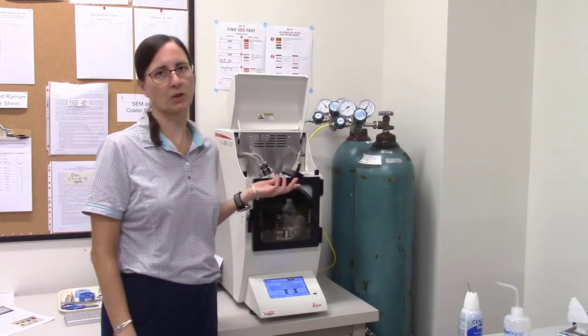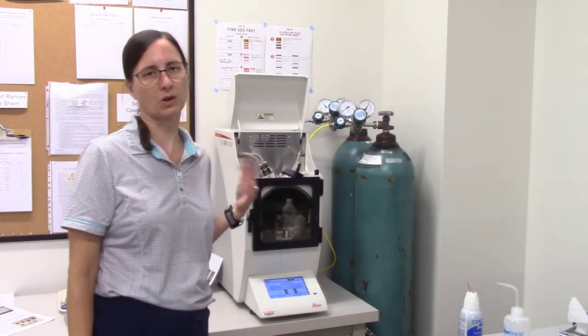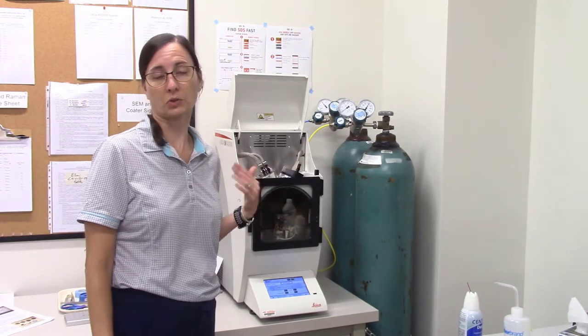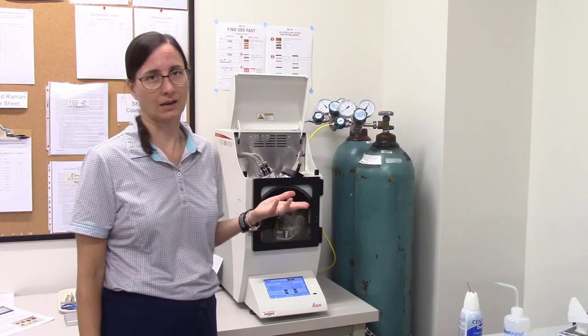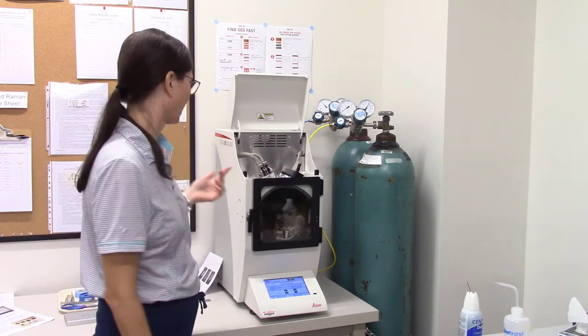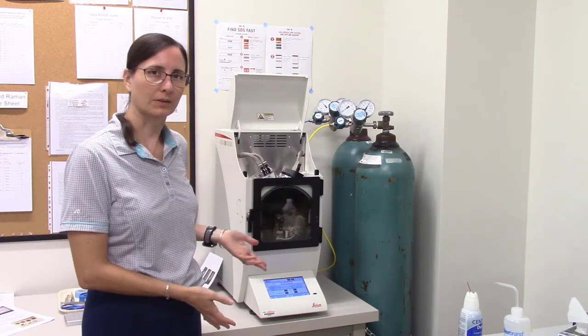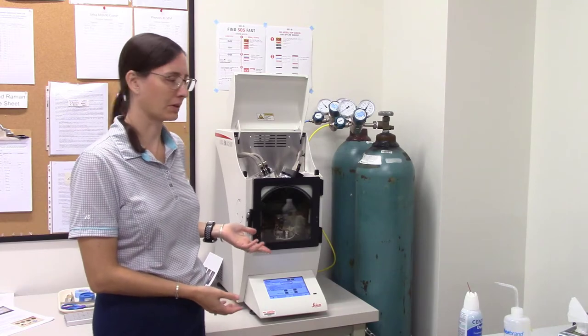Hi, this is the carbon coater we're going to use at JMU to coat our thin sections or thick sections or samples for things like the scanning electron microscope. Let me go over the parts of the carbon coater here.